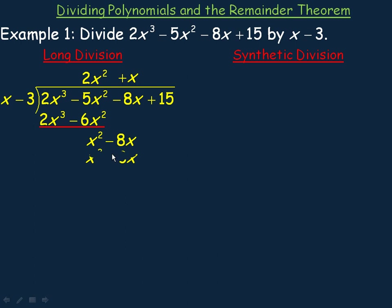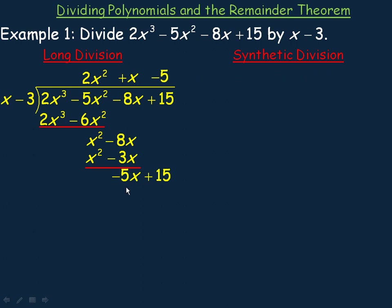x times x minus 3 gives x² minus 3x. We subtract — the x² terms cancel. Negative 8x take away negative 3x is the same as negative 8x plus 3x, which is minus 5x. Bring the 15 down. Divide x into negative 5x to get negative 5. Negative 5 times x minus 3 is minus 5x plus 15. We subtract and they're the same, so we get a remainder of 0.